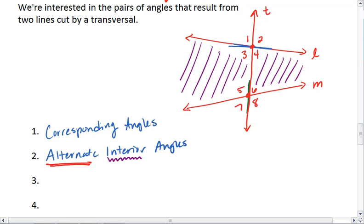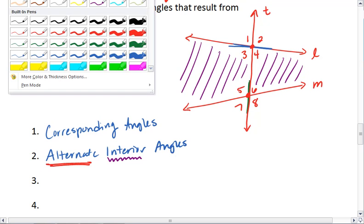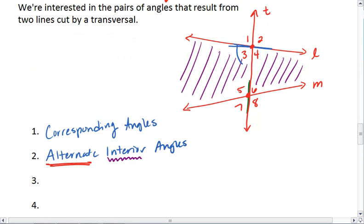For example, angle three and angle six. These are on opposite sides of our transversal, making them alternate angles. And they are in between lines L and M, making them interior angles. So angles three and angle six are an example of alternate interior angles.